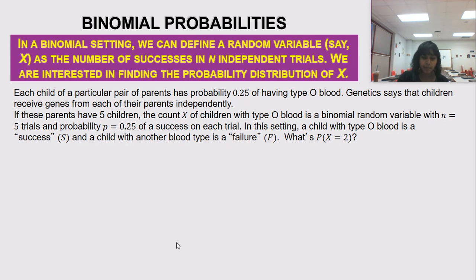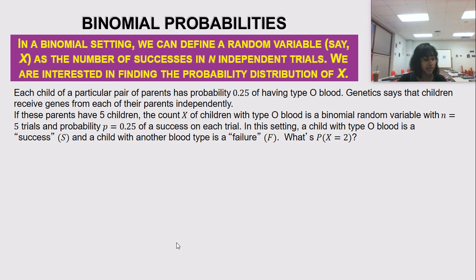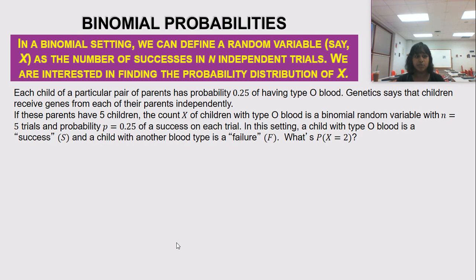Here's an example from page 390 of the textbook. Each child of a particular pair of parents has a probability of 0.25 of getting type O blood. Genetics tell us that children receive genes from each parent independently. If the parents have five children, the count X of children with type O blood is a binomial random variable, with N equals 5 and a probability of success of 0.25 in each trial.